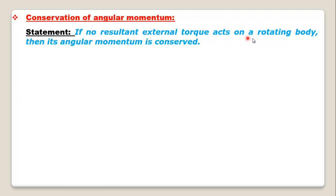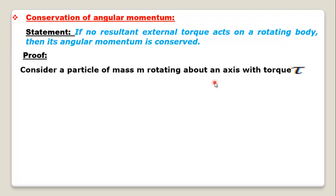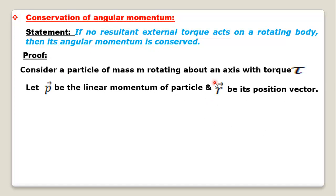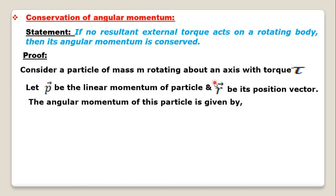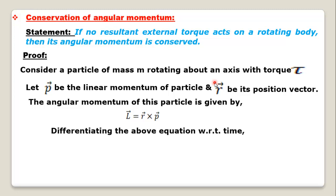If no external torque acts on a rotating rigid body, torque equals zero, then angular momentum is conserved or constant. To prove this: consider a particle of mass m rotating about an axis. Let P be the linear momentum and R be the position vector. The angular momentum in vector form is vector L = vector R cross vector P. Differentiating this equation with respect to time: dL/dt = derivative of (R cross P) with respect to time.